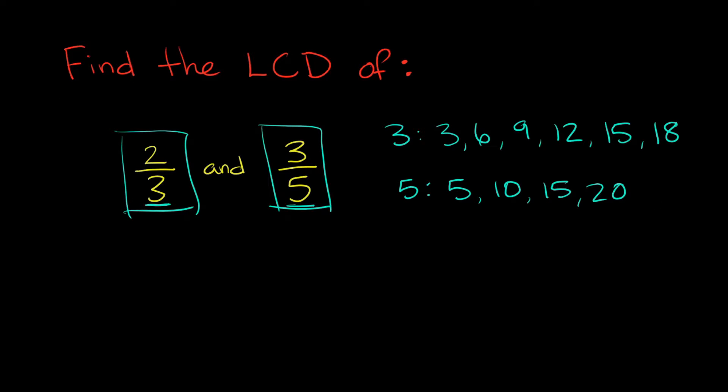Now the only thing we have to do here is find a number that they both have in common. So if you look through both of these lists, you'll notice that they both have the number 15 in common. So that's the smallest number or the smallest multiple that they both have in common. So that means the lowest common denominator that they have in common is 15. So this would be your answer. The least common denominator is equal to 15.